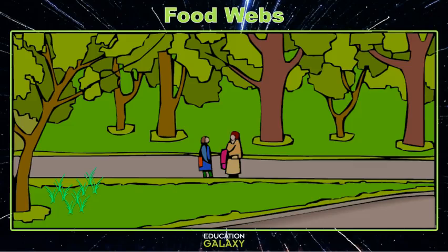Now let's find something that eats grass. A cricket. He's a consumer because he has to eat grass to get his energy. Let's draw an arrow following the flow of energy from the grass to the cricket. Since the cricket eats the grass, the arrow points to him since he gets all the energy from the grass.